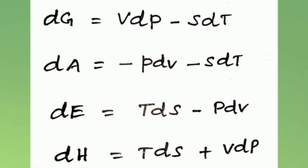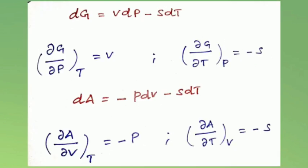First we take Gibbs free energy: dG = VdP − SdT. At constant temperature, the SdT term goes to zero, so dG = VdP. Rearranging, (∂G/∂P) at constant temperature equals V. Similarly, at constant pressure, dG = −SdT, so (∂G/∂T) at constant pressure equals −S.